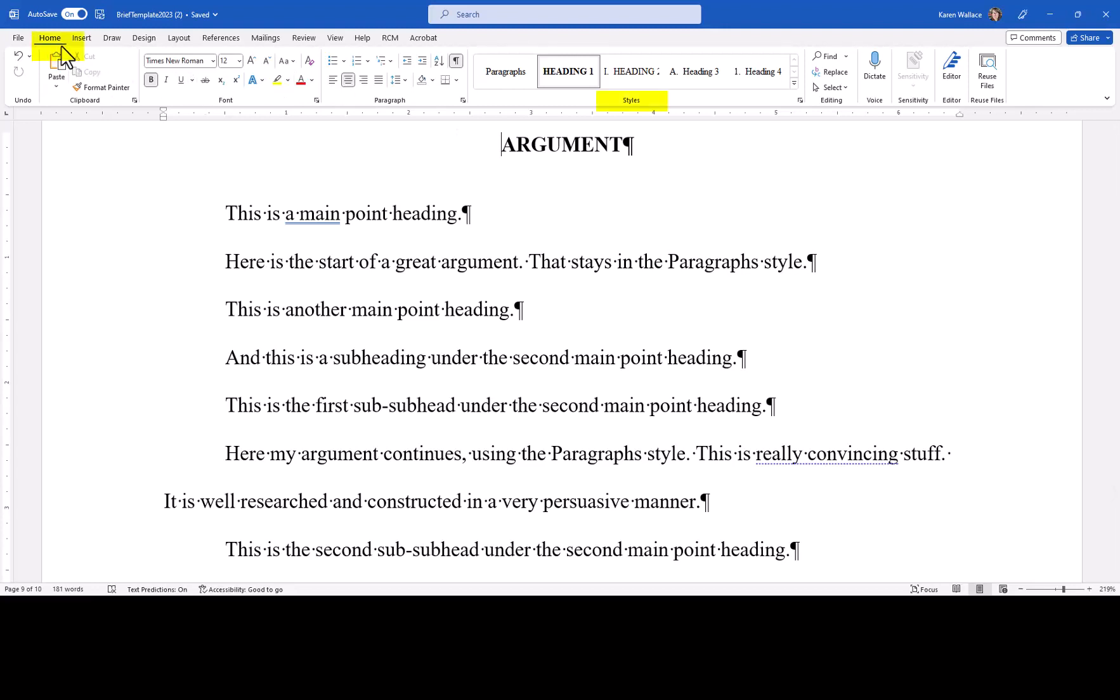Styles are also found on the home tab in the Styles box, and the template has five styles defined. Paragraphs are what you'll use for the regular paragraphs in your brief, and then there are headings 1, 2, 3, and 4 which are used for different heading levels.